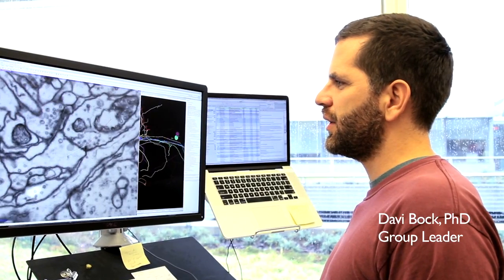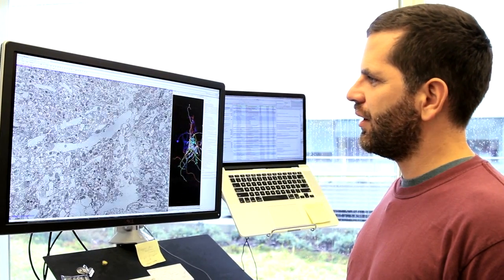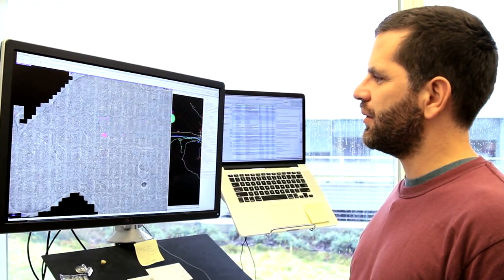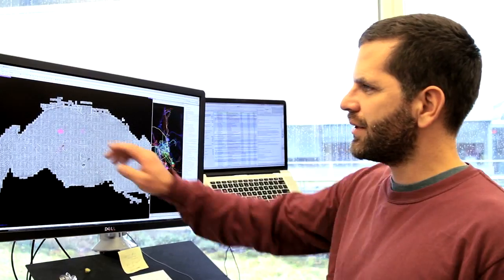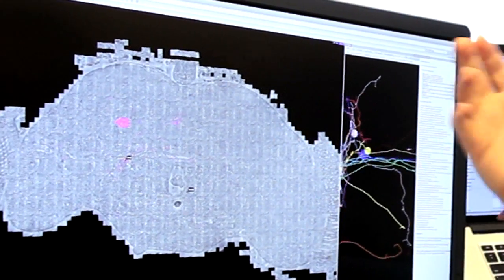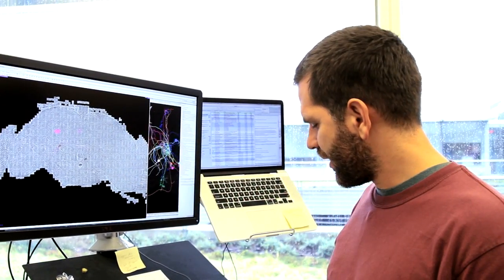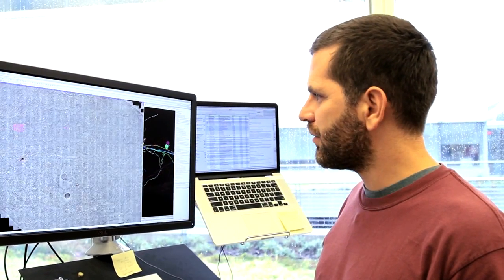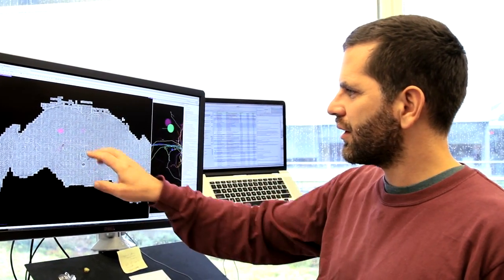What my lab did is we took lots of pictures of a fly brain, and so we have a 100 terabyte data set that has 20 million images. Each one of these little squares is one individual image, and we've imaged now over 6,000 sections at this very high resolution of 4 by 4 by 4 nanometers. What you can see are these little dots in here, and that's where people have done tracing work.